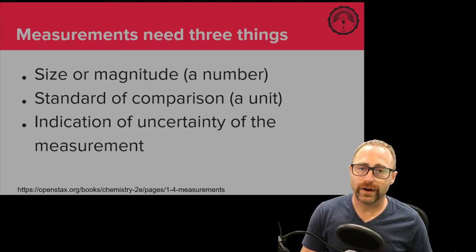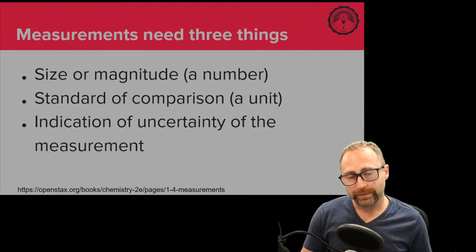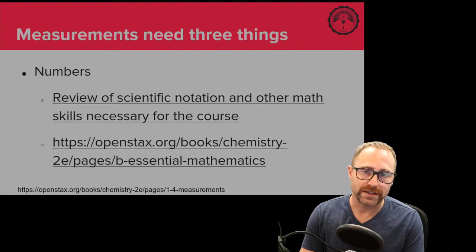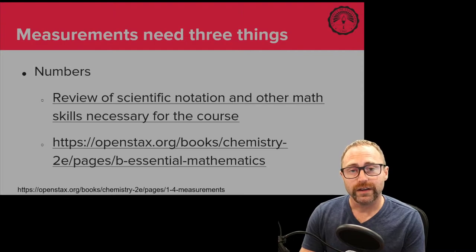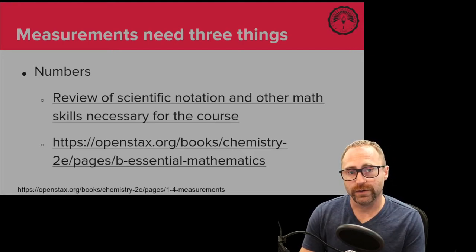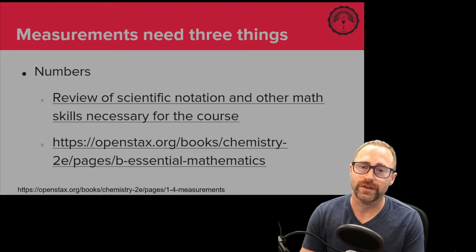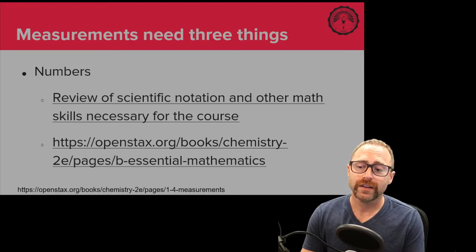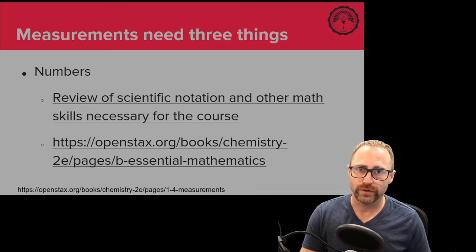The last thing that we need to indicate to our audience is the uncertainty in our measurement, and we're going to talk about that here in a little bit. So specifically when we're talking about numbers, this is the same way you've been doing stuff for a long time. The one thing though that you may not be completely comfortable with is scientific notation. We're going to be using scientific notation quite a bit in our class. Your textbook has a nice little review area over things like scientific notation. We'll be practicing problems in our discussion section that utilize the ability to use scientific notation.